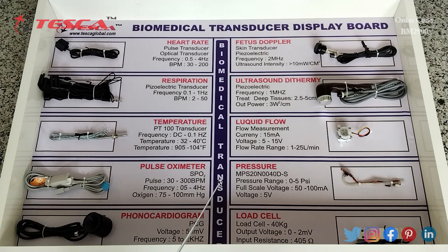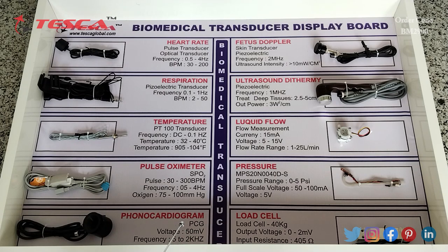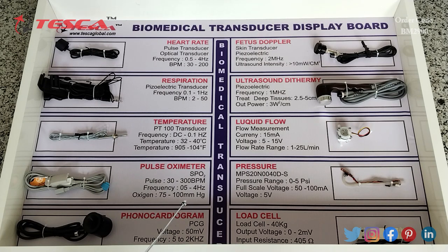Then this is the pressure transducer. Its pressure range is 0 to 5 PSI. Full scale voltage is 50 to 100 millivolts and voltage range is 5 volts.